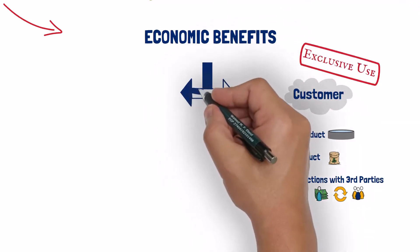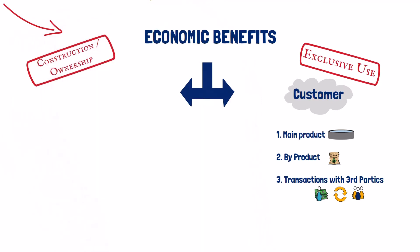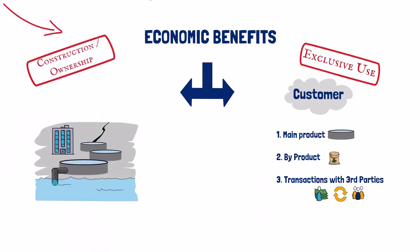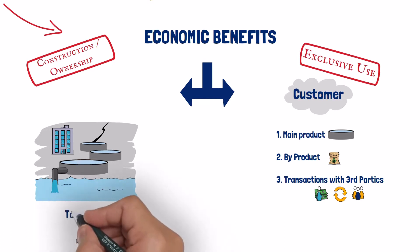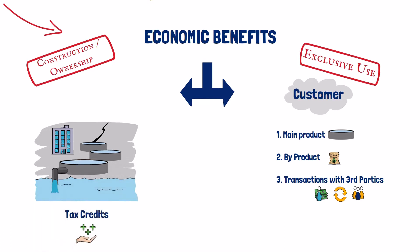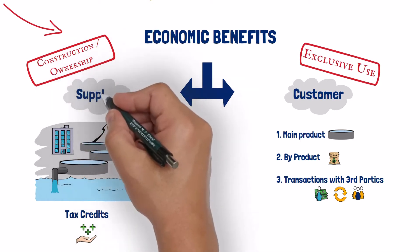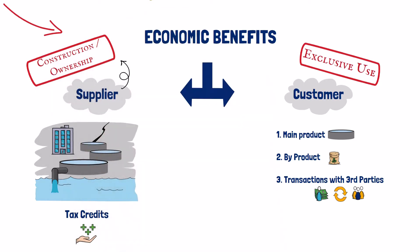There is another category of economic benefits that are related to the construction and ownership of the asset, and not just its use. For example, tax credits received for the construction and ownership of water treatment facilities. Here, the supplier is the party that is entitled to this category of benefits and not the customer, because the supplier is the owner of the facility.